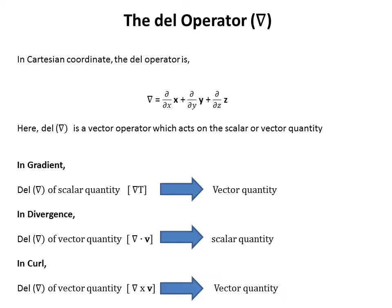First we have to understand the DEL operator. If you don't know how to use the DEL operator, you don't know how to calculate gradient, divergence, and curl. In Cartesian coordinates, the DEL operator is: DEL = (∂/∂x)x̂ + (∂/∂y)ŷ + (∂/∂z)ẑ. Here DEL is the vector operator which acts on scalar or vector quantities. Remember, the DEL operator is not a vector quantity.